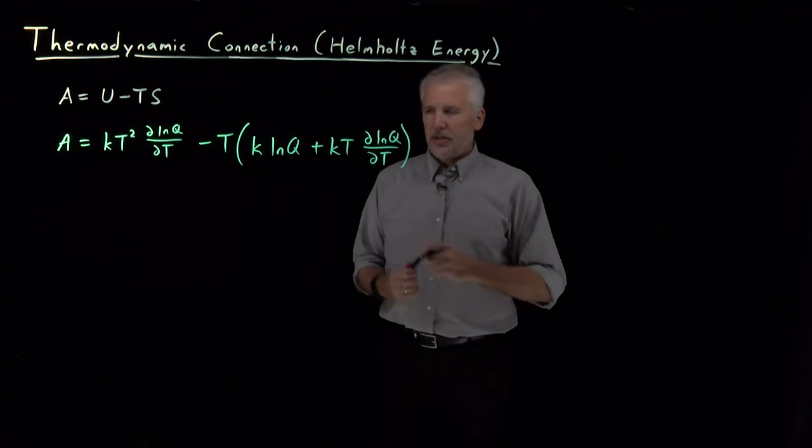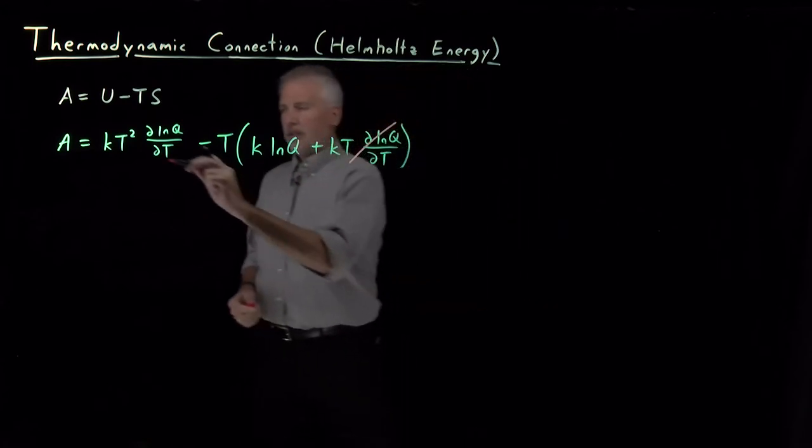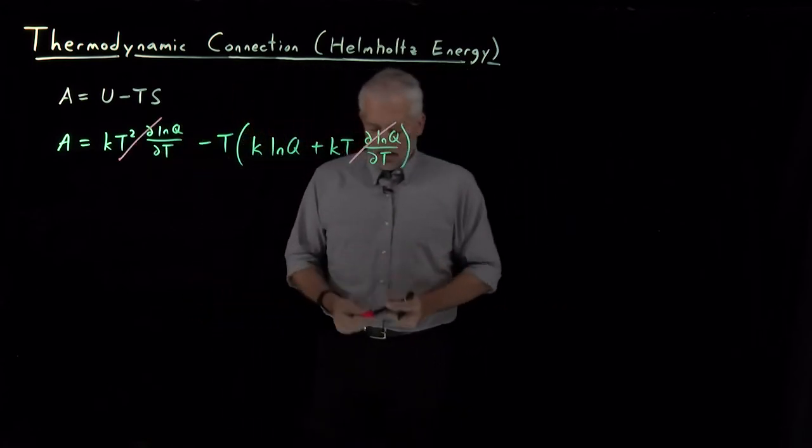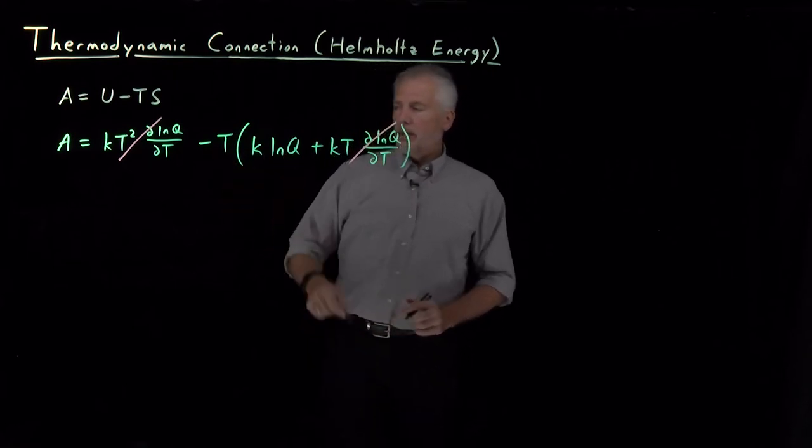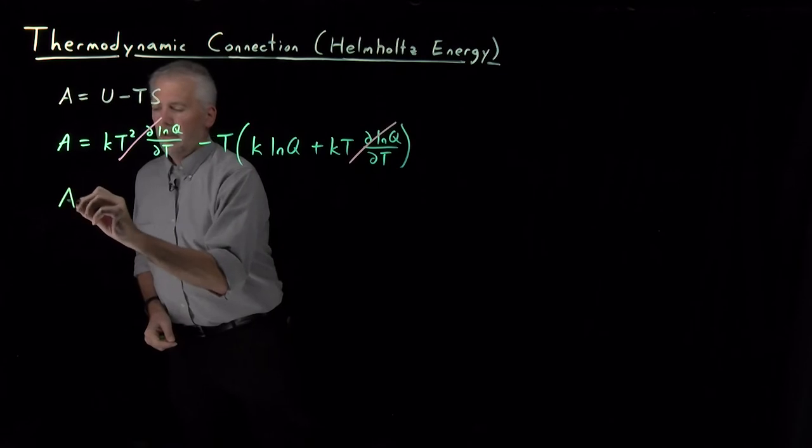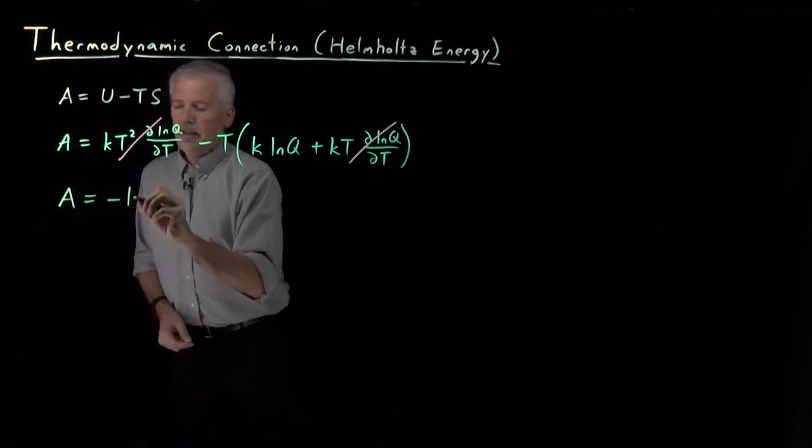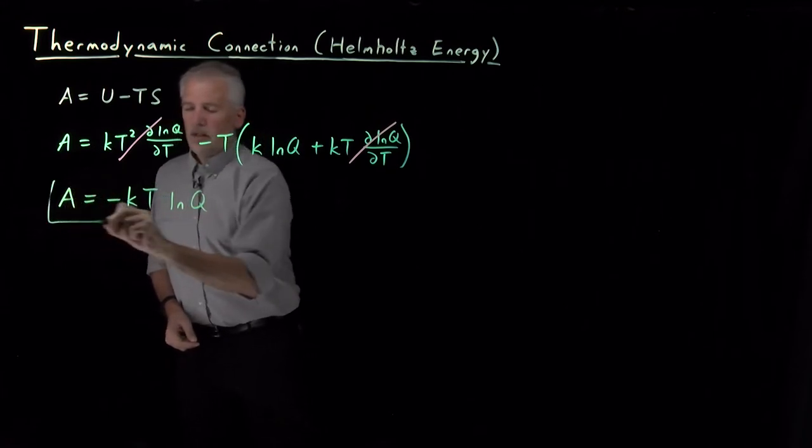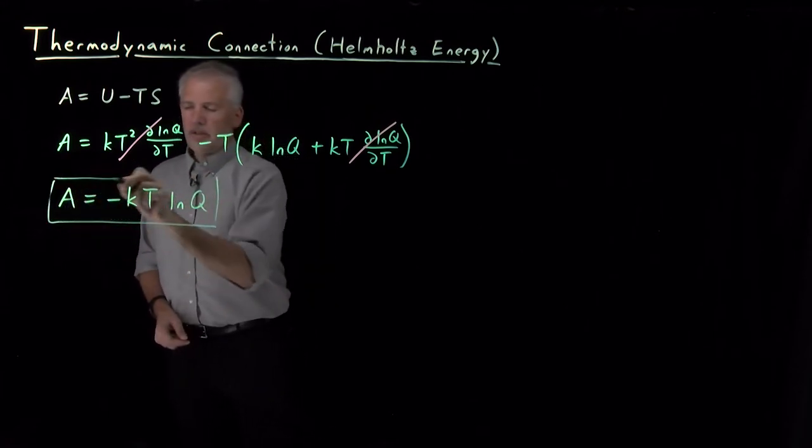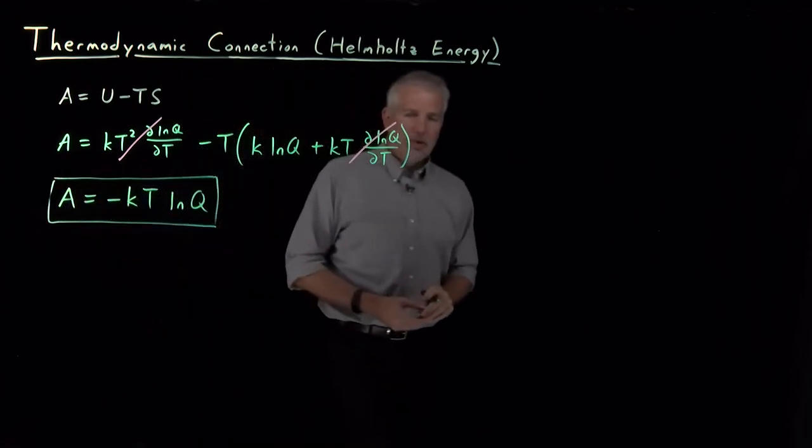So there's cancellation between the second term in parentheses and the term out front. And all that we're left with is this term negative kT times the log of Q. So Helmholtz energy is minus kT log Q. That's our thermodynamic connection formula for the Helmholtz energy.